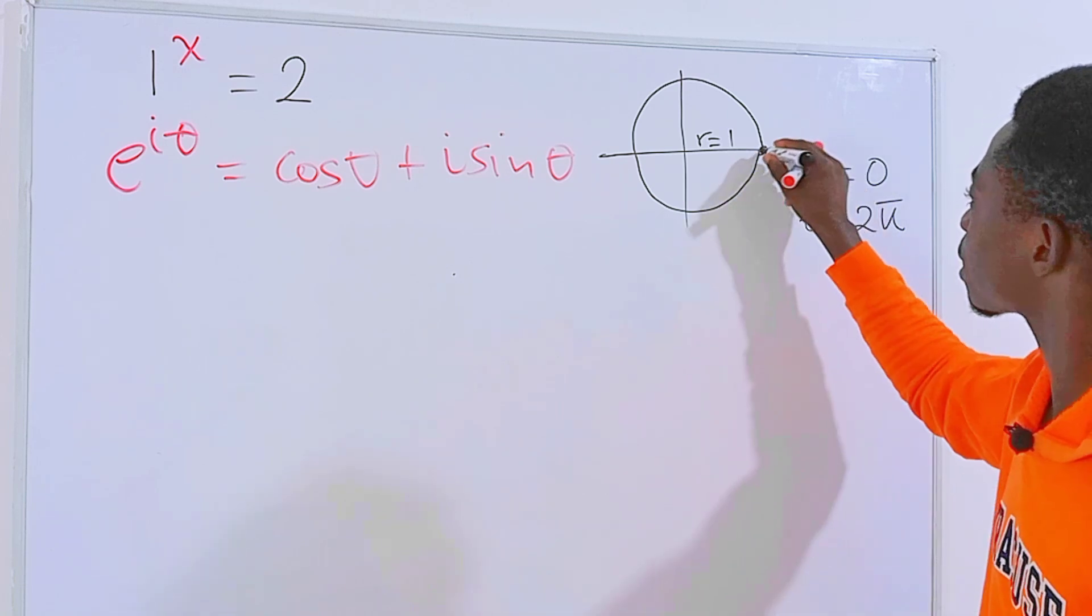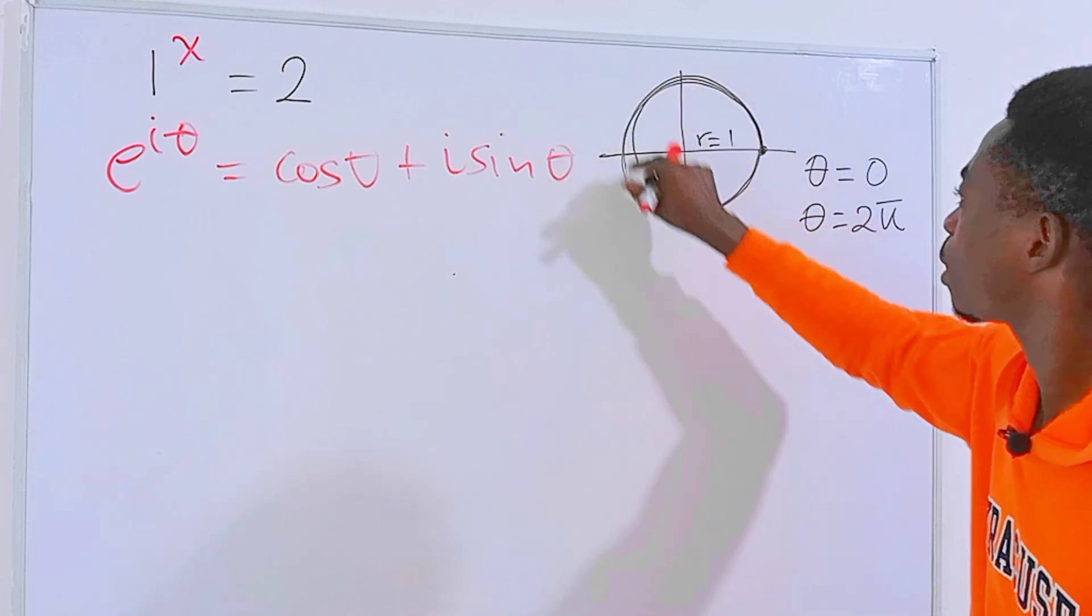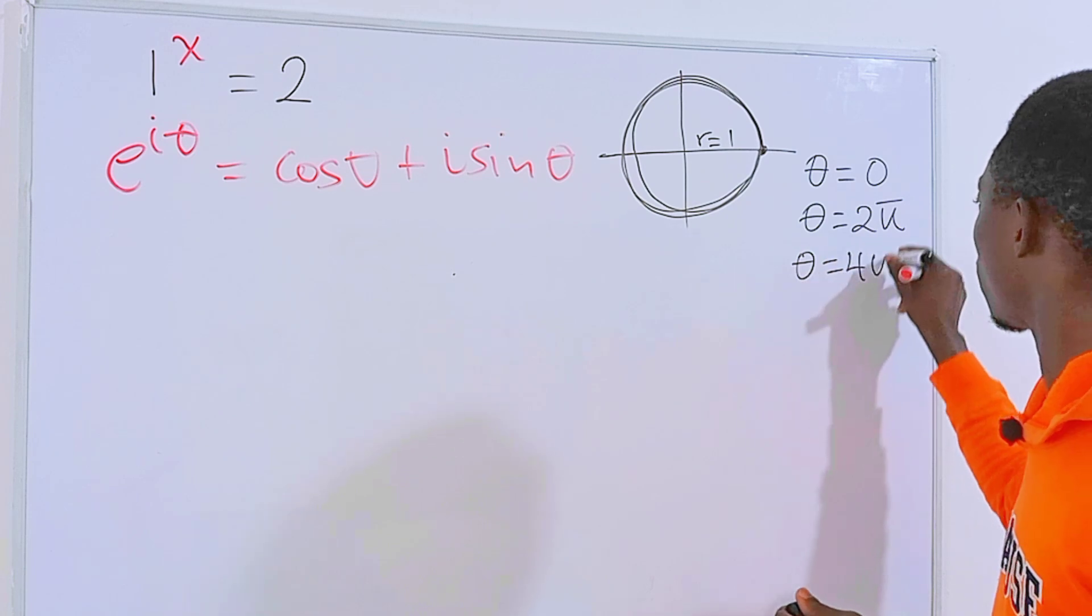In the same way, we can stand here and rotate it twice like this—1, then 2. And theta will equal 4π.